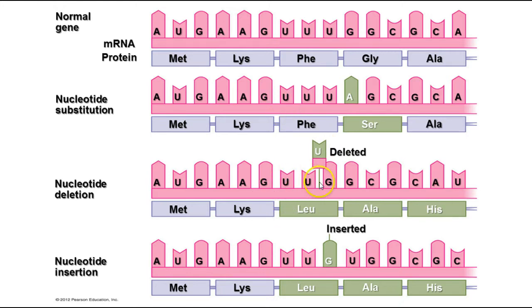But if we delete or insert a base, it changes everything from that point on by shifting the reading frame. Instead of reading UUU, if we delete that U, it shifts everything so we read GGC instead of AGC, and GCA, and so forth. If we insert one, it shifts everything the other way. Generally speaking, insertions and deletions are going to be much more harmful mutations than substitutions — though some substitutions can be very harmful, as in sickle cell anemia, which changes by only one base pair.